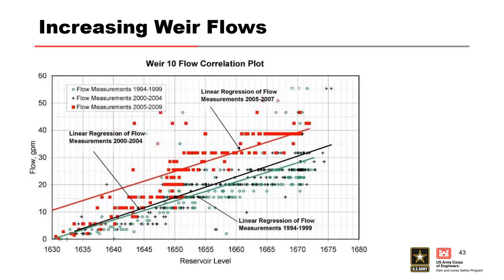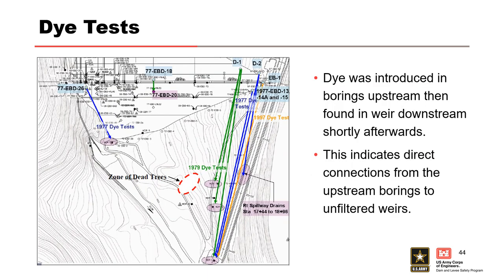Left abutment weirs 5, 7, and 10 showed increasing flow trends correlated with pool, suggesting a worsening condition, perhaps the erosion of soil infilling from the karst foundation. Dye tests in the left abutment showed direct connections from borings upstream to unfiltered weirs downstream, with dye introduced upstream appearing in the weirs shortly afterwards.